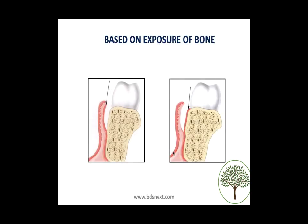Before knowing the incisions, you have to know the different types of flaps. Based on exposure, we have the full thickness flap, where we raise the entire soft tissue so the complete soft tissue is on one side and there is exposed bone on the other, and the partial thickness flap, where some soft tissue is left on the bone and some is reflected.